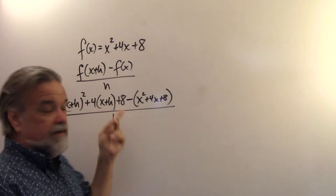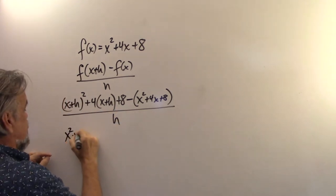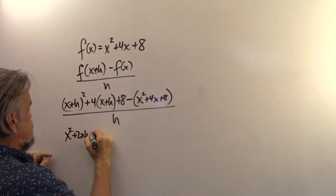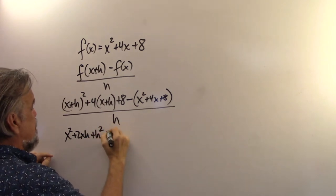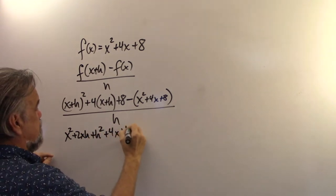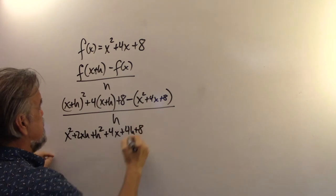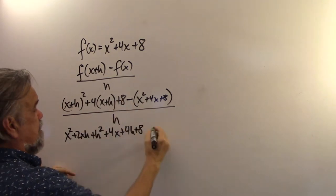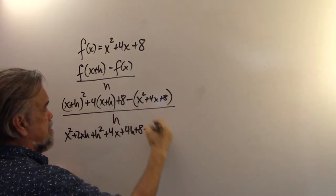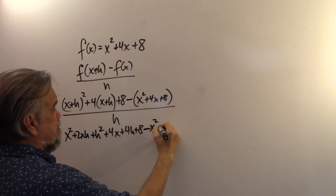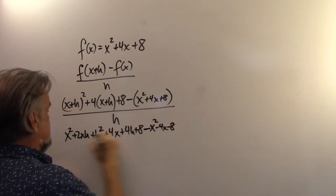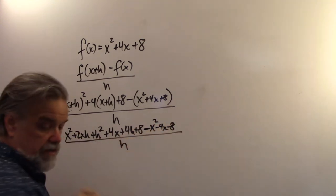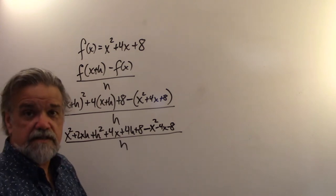Now, we've got to multiply this out. So this is x squared plus 2xh plus h squared plus 4x plus 4h plus 8. That's all that part. Minus, now let's distribute the minus. Minus x squared minus 4x minus 8 over h. And good news is that's as messy as it's going to get.